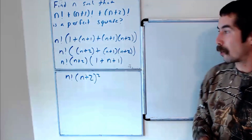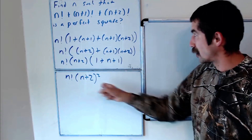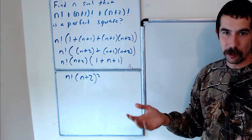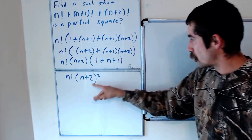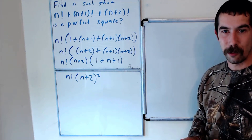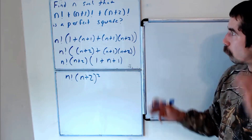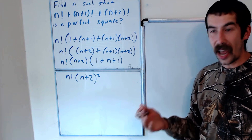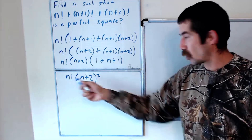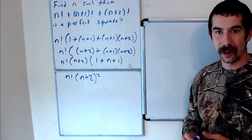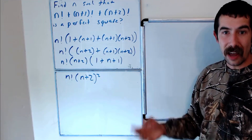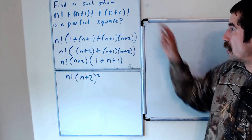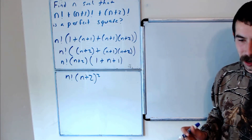It's a lot easier to check when a product is a perfect square than when a sum is a perfect square — that's why we did this first step. Since n+2 squared is always a perfect square, what we really want to find is all n such that n factorial is a perfect square. If n factorial is a perfect square, then this sum is also a perfect square.